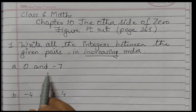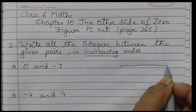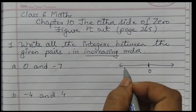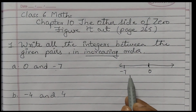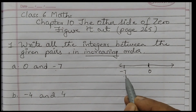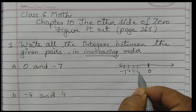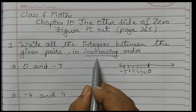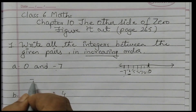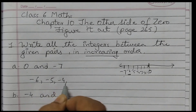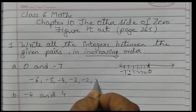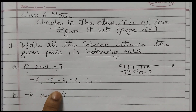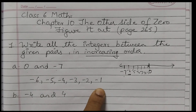The first pair is 0 and minus 7. I will draw a number line, put 0 here, and mark minus 7. Negative numbers are always to the left of 0. The numbers between these two are minus 6, minus 5, minus 4, minus 3, minus 2, and minus 1. In increasing order, smallest to biggest: minus 6, minus 5, minus 4, minus 3, minus 2, minus 1.